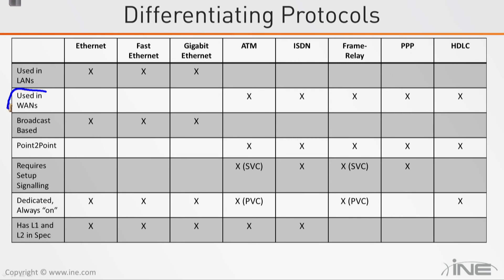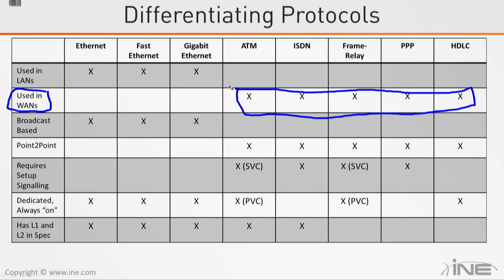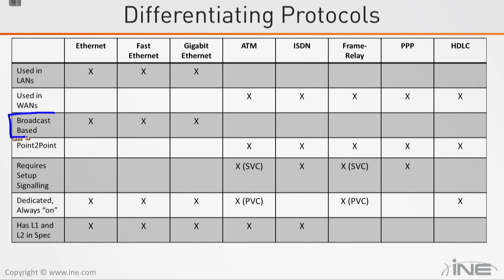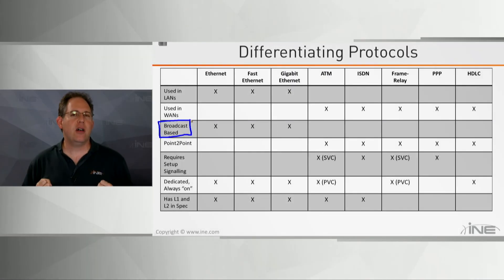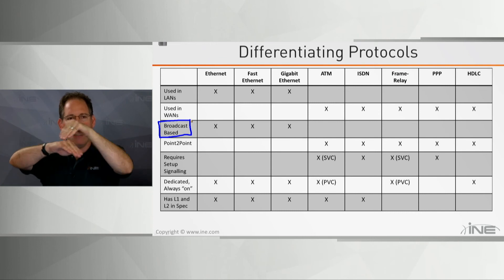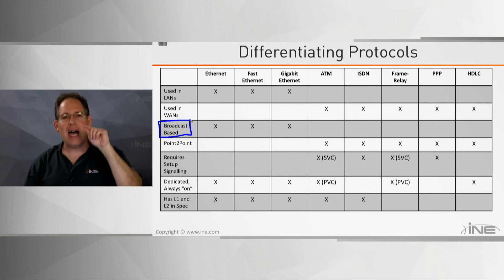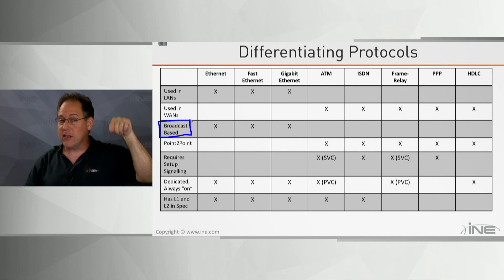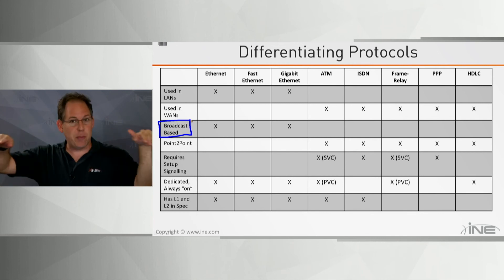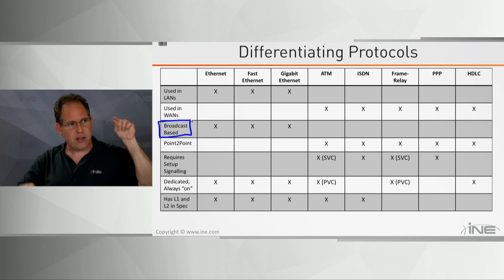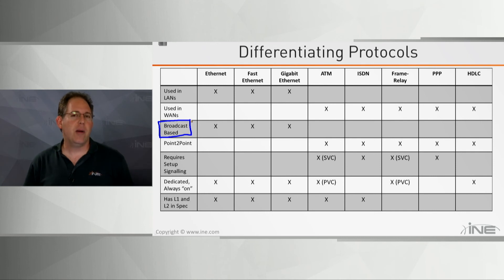Gigabit Ethernet can blur the lines since over fiber optic cabling it can span quite a distance, potentially used in WANs as well. But usually when we think of Ethernet, we think of LANs. The layer 2 protocols designed to operate across vast distances — hundreds or thousands of miles — are ATM, ISDN, Frame Relay, PPP, and HDLC, all specifically designed for wide area networks.